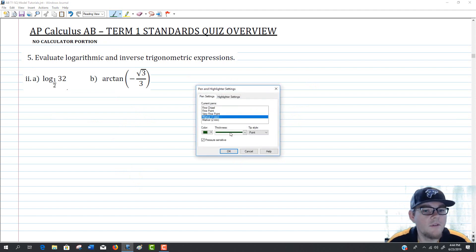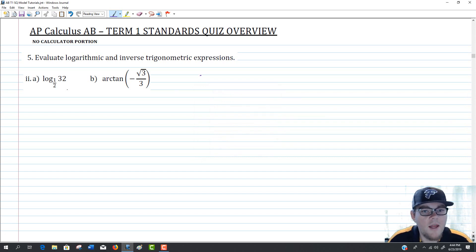Moving on to the second part of number 5. We want to first evaluate for part A, log base 1 half of 32. So in order to do this, a good way to do this is to set it equal to something. I'll call it y. And then to rewrite it in an exponential form. So in this case, I would rewrite this as 1 half to the y equals 32. Now that we have this here, our goal would be to find a common base and to get them to both be something to a power. Because then we could basically undo and get rid of those bases.